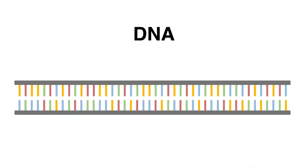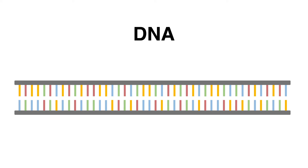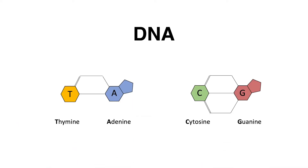The building blocks for this are four different nucleosides. Thymine pairs together with adenine, whereas guanine forms hydrogen bonds with cytosine.